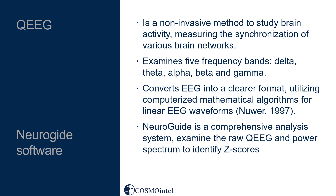Quantitative electroencephalogram is a non-invasive method to study brain activity measuring the synchronization of various brain networks. It examines five frequency bands: delta, theta, alpha, beta and gamma. QEEG converts EEG into a clearer format, utilizing computerized mathematical algorithms for linear EEG waveforms. Neuroguide Software is an informative and comprehensive digital EEG and QEEG analysis system which examines the raw data and power spectrum to identify Z-scores.